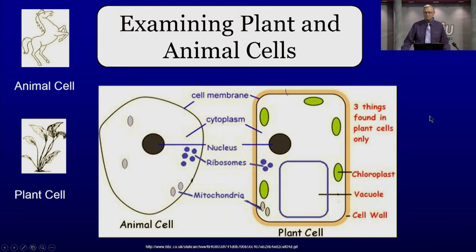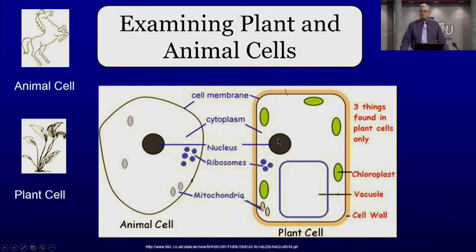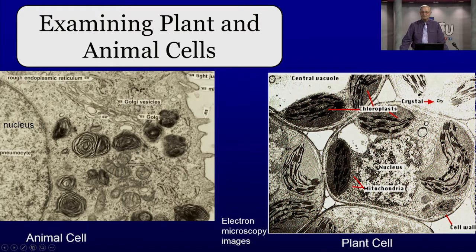Three things we can see: one is chloroplasts — plant cells have chloroplasts, but not animal cells. Chloroplasts let you use sunlight, the source of all energy, to make and store sugars. There's also a large vacuole in plant cells — animal cells have small vacuoles. And plant cells have a cell wall outside their cell membrane. We also use electron microscopy to look at the organelles since organelles are microscopic.